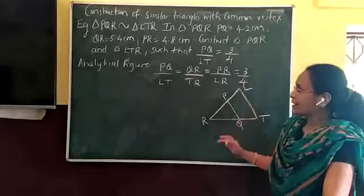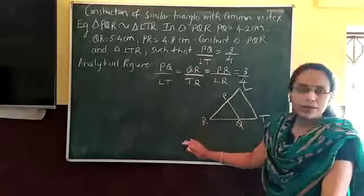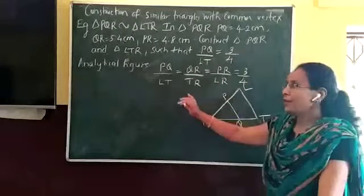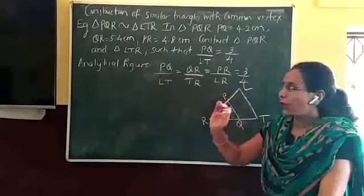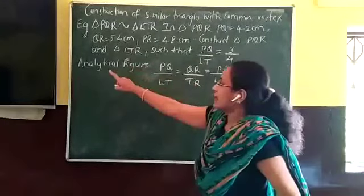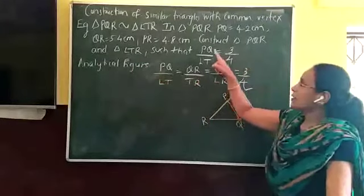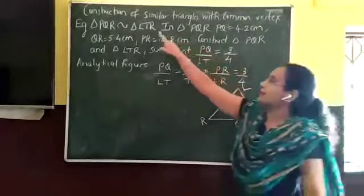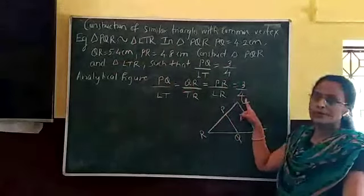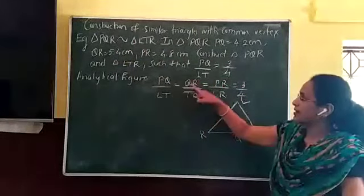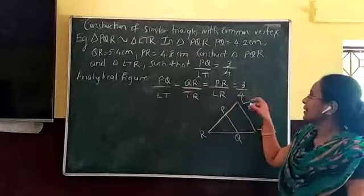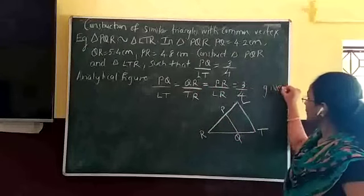How do we start? Before starting, you must remember one thing — there are no such calculations involved in this construction, but you have to get a grasp of how to proceed. I start with the analysis: because PQ upon NT is 3 upon 4 and the two triangles are similar, all corresponding ratios are equal to 3 by 4. So I write PQ upon NT equal to QR upon TR equal to PR upon NR equal to 3 upon 4.